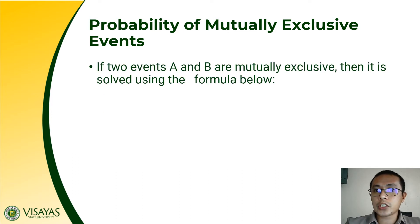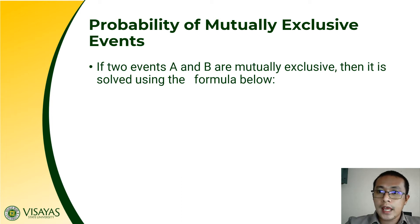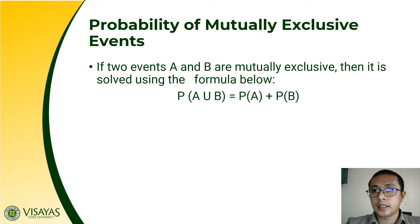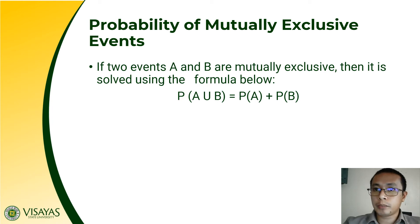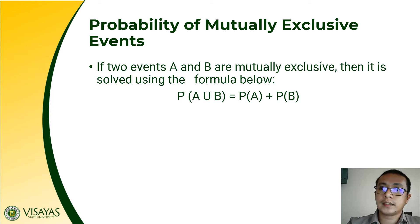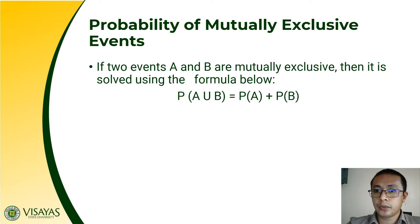In short, if two events A and B are mutually exclusive, it is solved using the formula: the probability of A union B is equal to the probability of A plus the probability of B, since events A and B are mutually exclusive. We are simply going to add the probability that event A will occur and the probability that event B will occur.